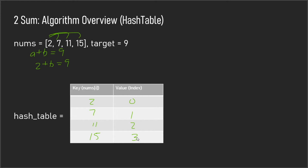Now you loop through the nums array again. Starting at index 0, the value is 2, and we calculate its complement, which is 7. We check to see if 7 is in our hash table, and if it is, we return the index of the current element — which is 0 — and the index of the complement — which is 1.